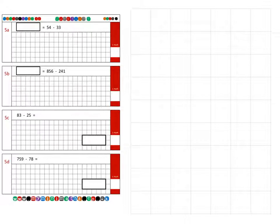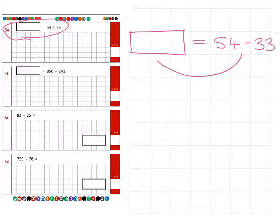First, question 5a at the top. We have an answer that equals 54 subtract 33. Don't forget, it doesn't matter which way around we write this - we may change it around if you find it easier. Just remember, they are identical.